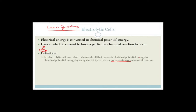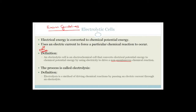Galvanic is spontaneous; electrolytic is non-spontaneous. The process is called electrolysis, and there's a definition for that too: electrolysis is a method of driving chemical reactions by passing an electric current through an electrolyte. That's pretty easy to remember - they're not that difficult.